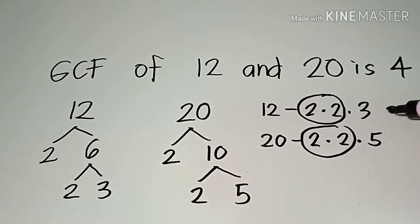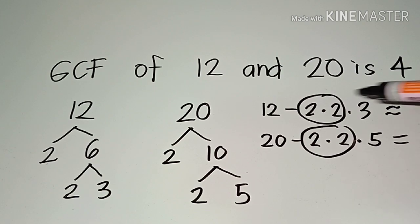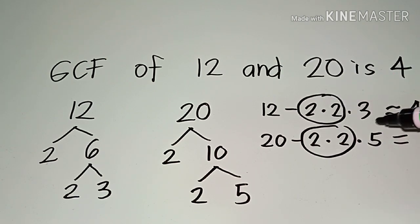In other words, 12 is just the same as 4 times 3, and 20 is just the same as 4 times 5. So that is why their common factor is 4.